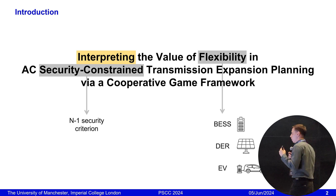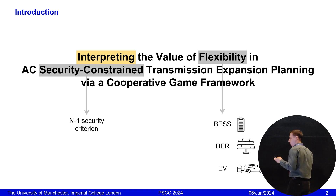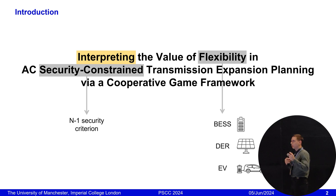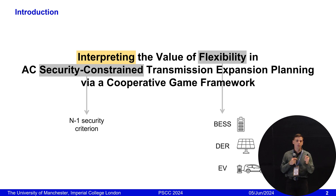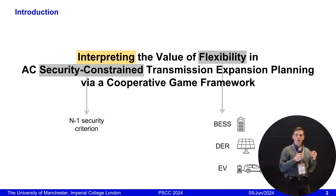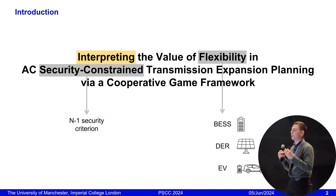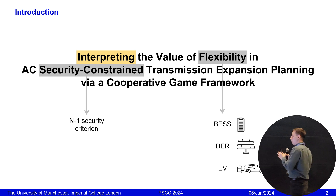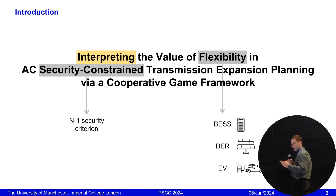So we are looking at what happens if one element of the system fails. And finally, we want to interpret the value of flexibility in this problem. Here we were inspired by machine learning studies and game theoretic works, where researchers work with huge learning models and then want to interpret the impact of features and input data on the output decisions. You will see how we did it in the context of transmission expansion planning.